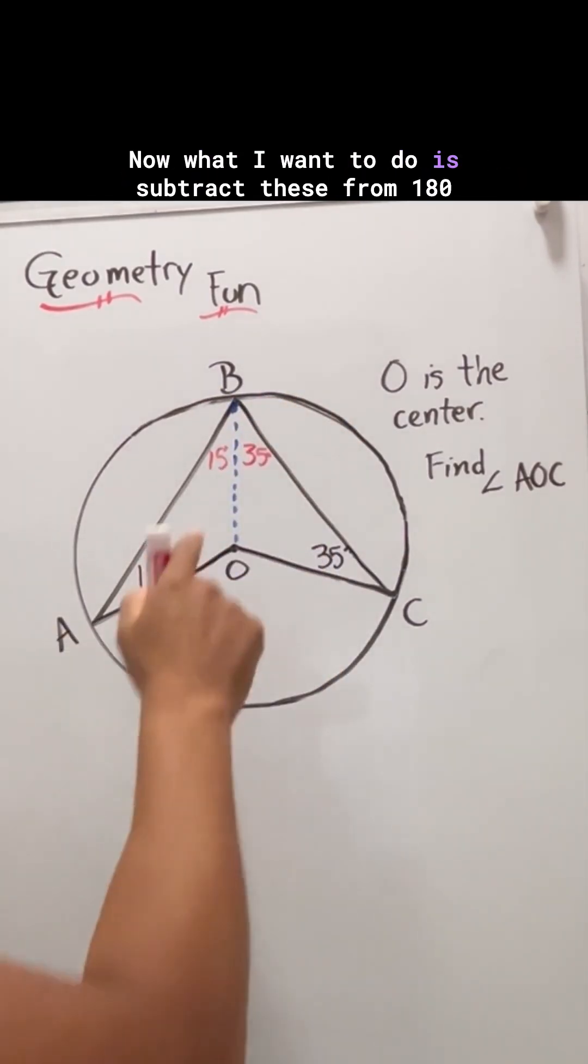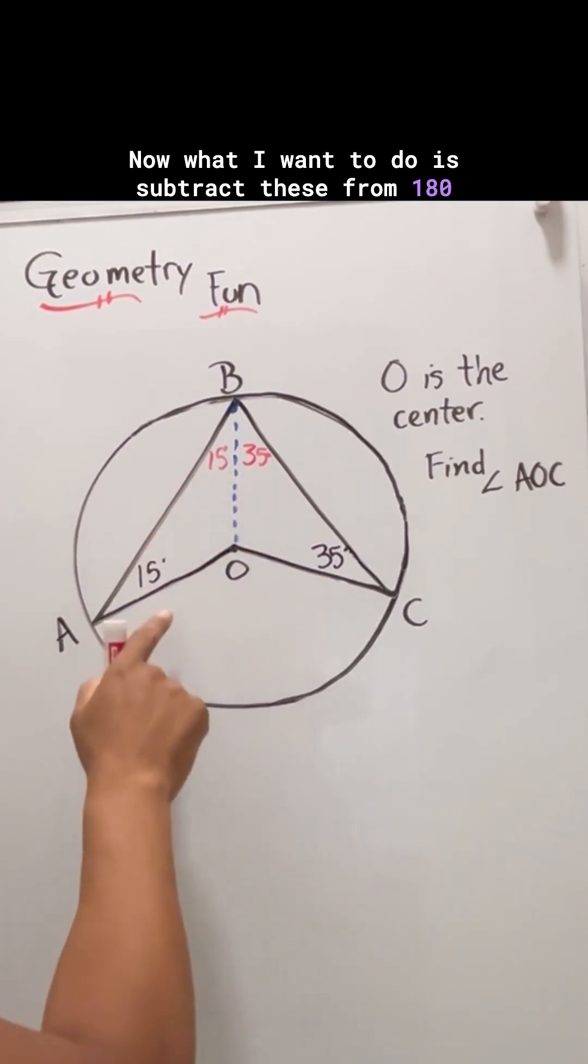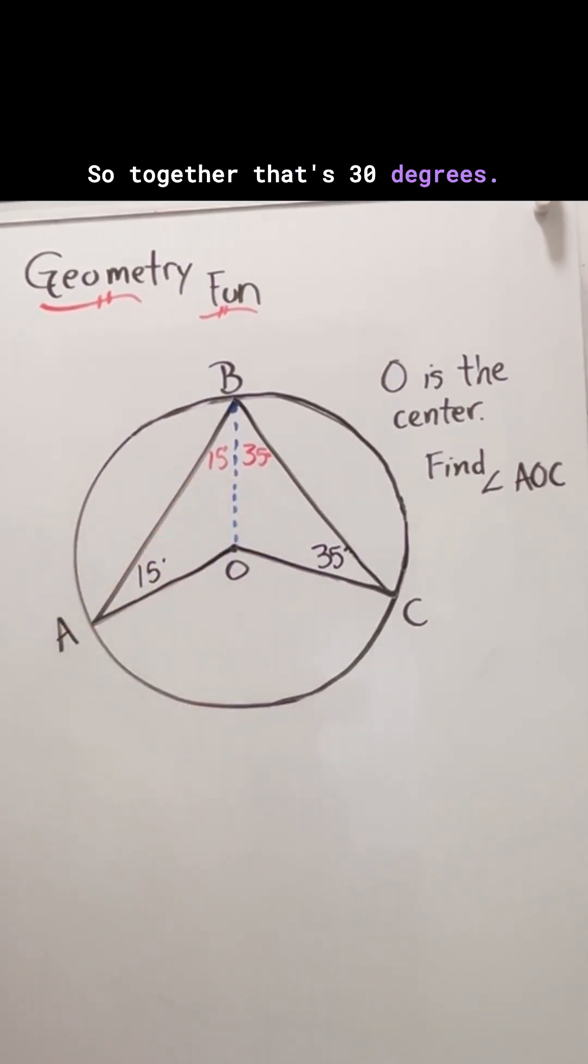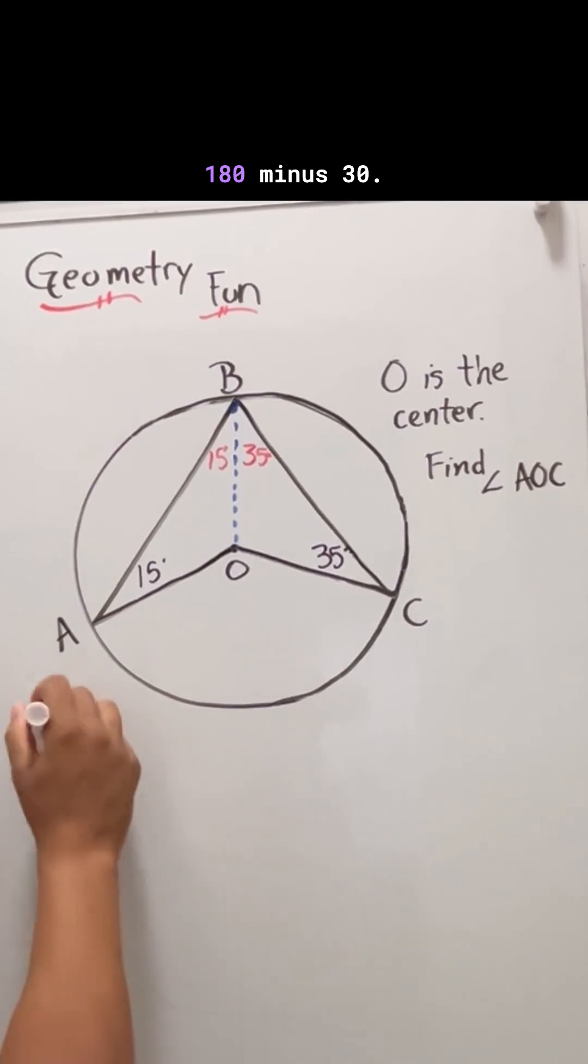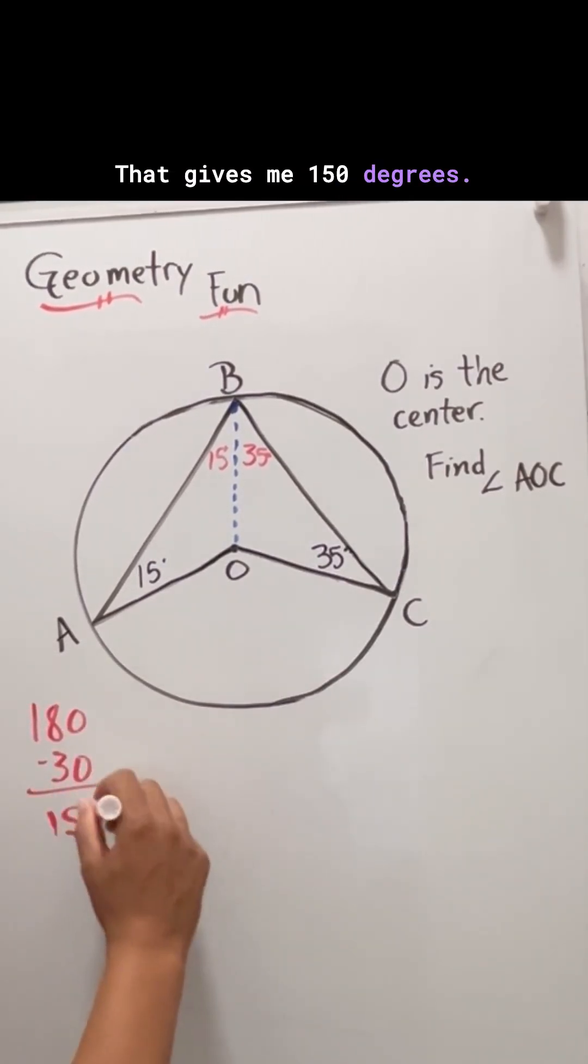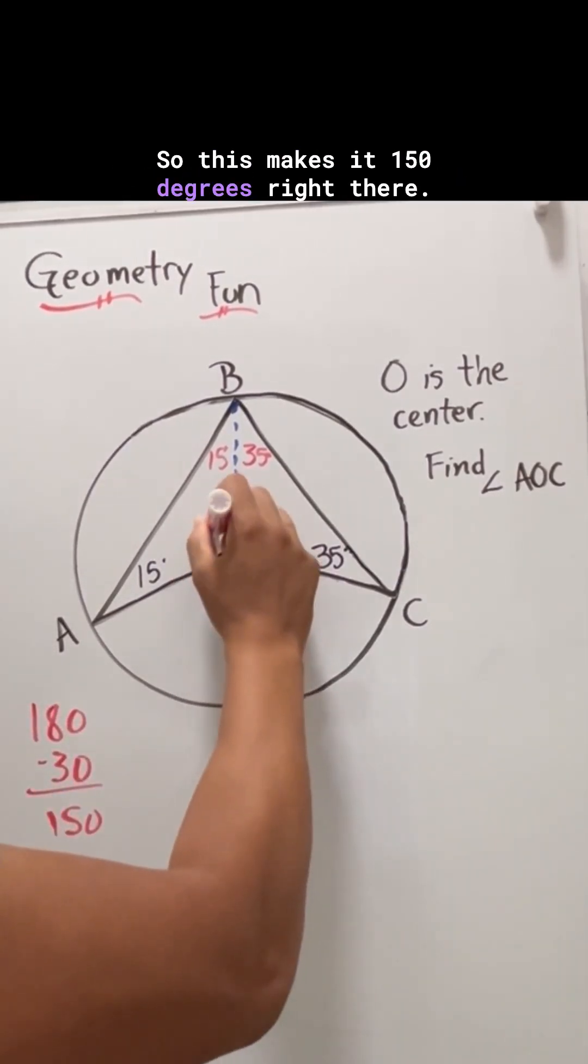Now what I want to do is subtract these from 180 to get this angle here. Together that's 30 degrees. 180 minus 30 gives me 150 degrees.